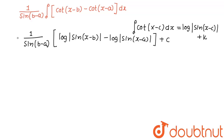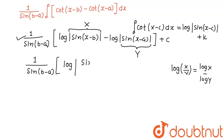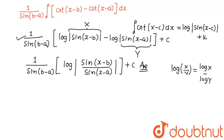This can also be written another way. We all know that log x minus log y equals log(x upon y). So considering sin(x minus b) as X and sin(x minus a) as Y, the final answer can be written as 1 upon sin(b minus a) times log|sin(x minus b) upon sin(x minus a)| plus C. This is our final answer. Thank you, students.